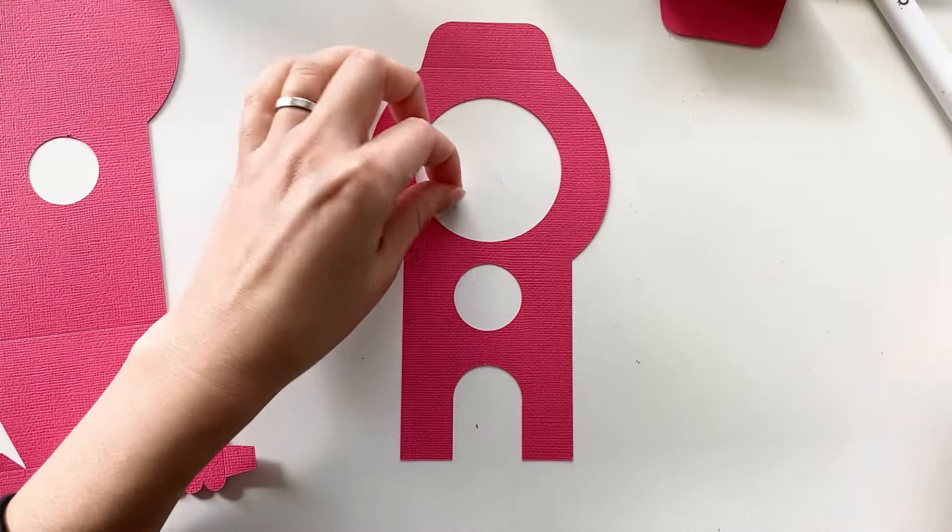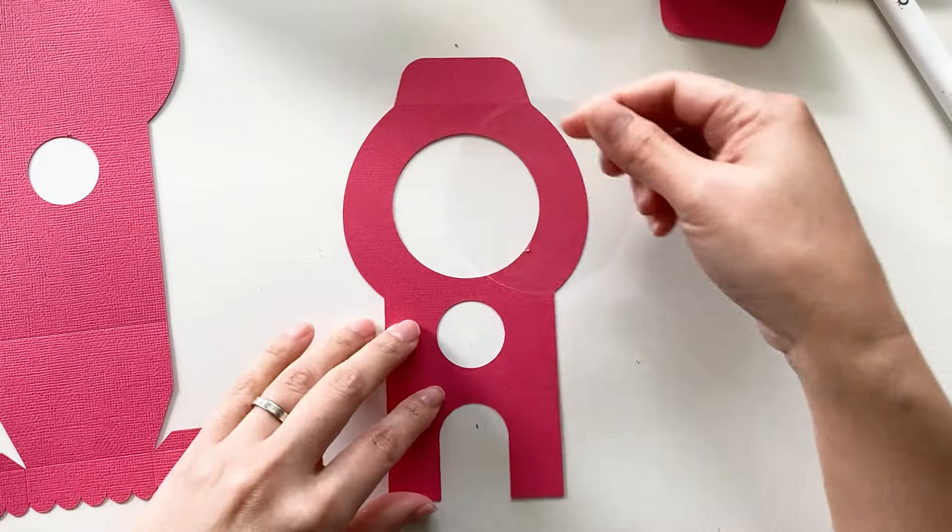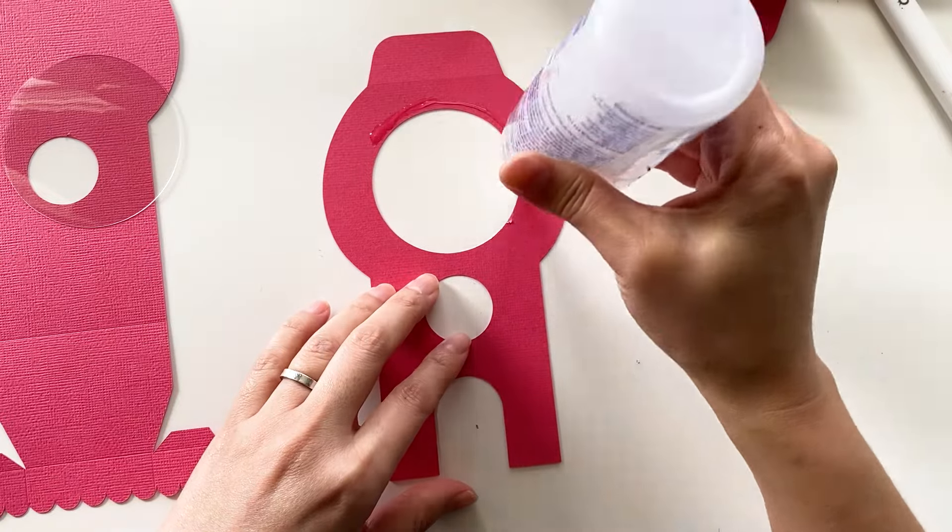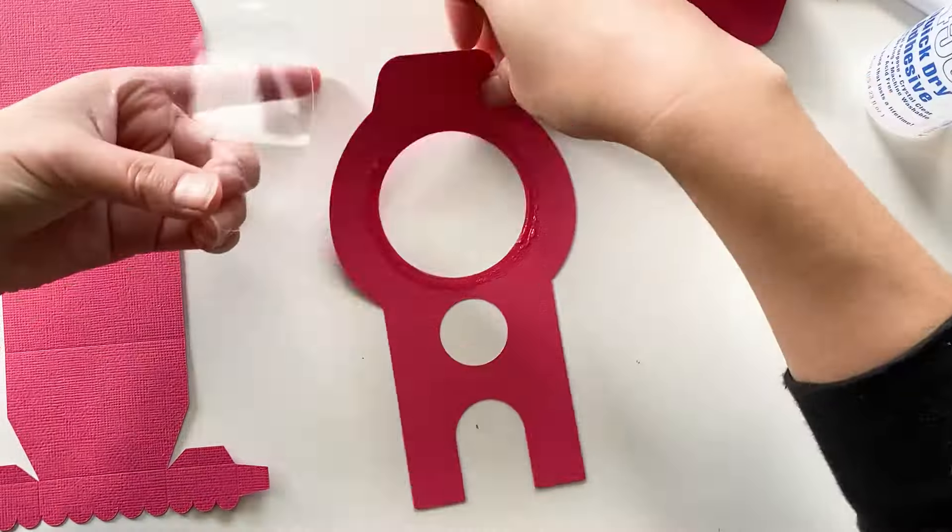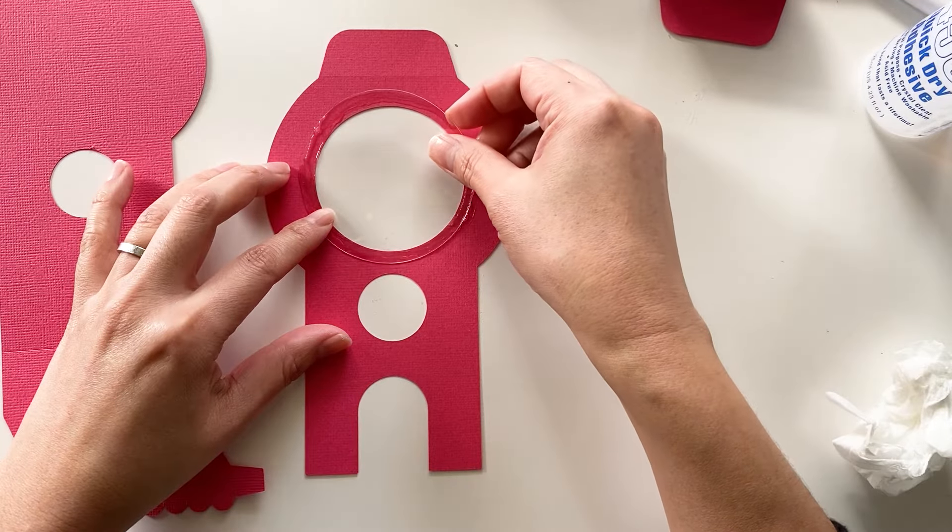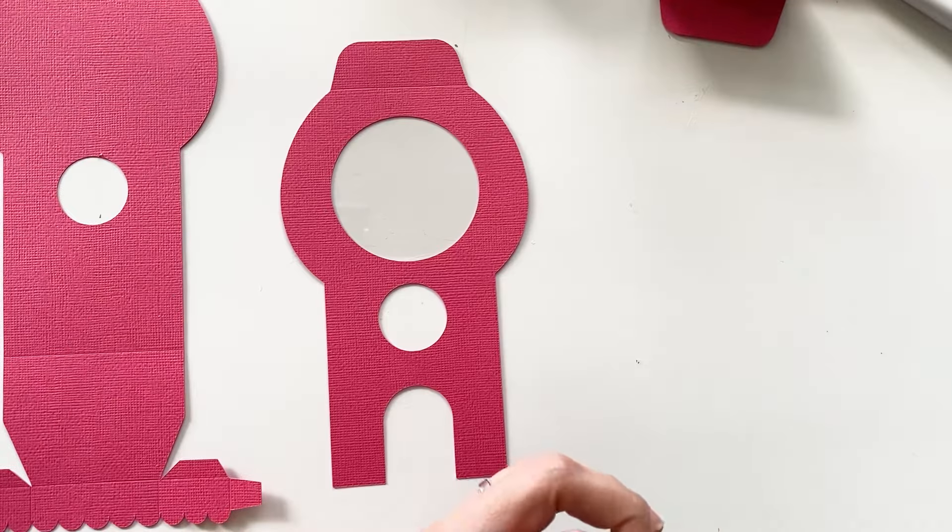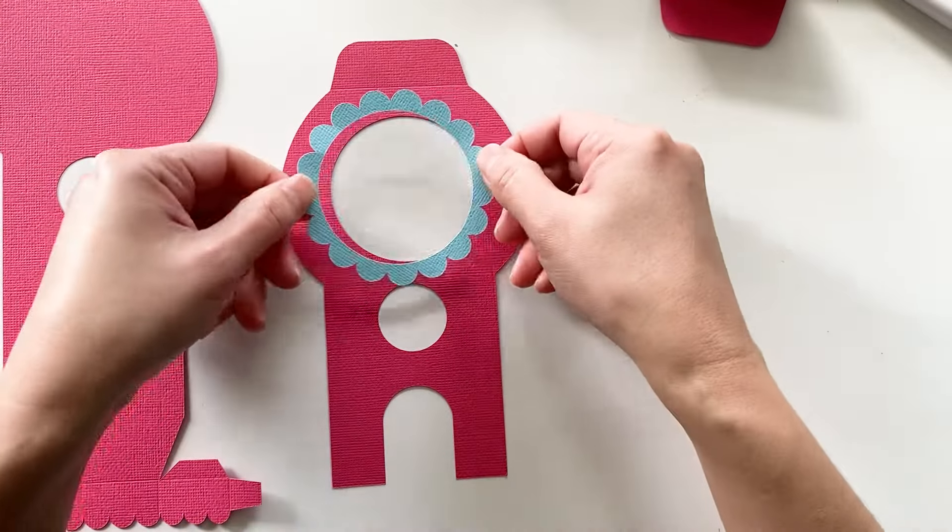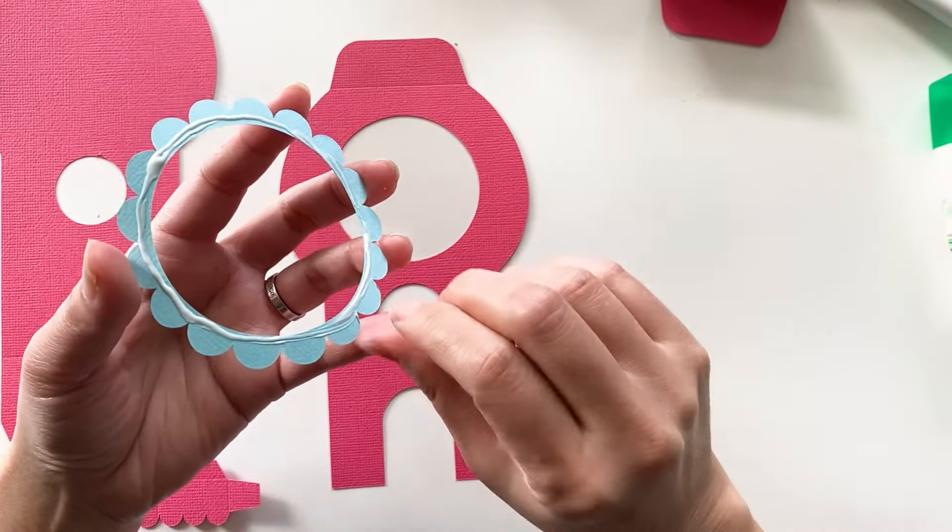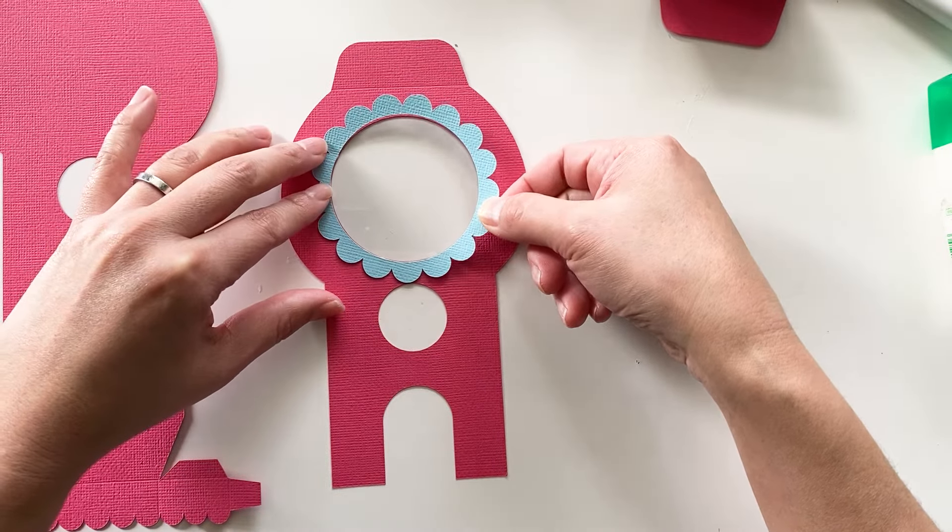Get the front piece for the gumball machine and the acetate sheet. Flip it over. We are going to glue the acetate sheet on. Be careful, don't let any glue get on the acetate sheet. Turn it over and we will put the flower frame on. Be careful with the glue.